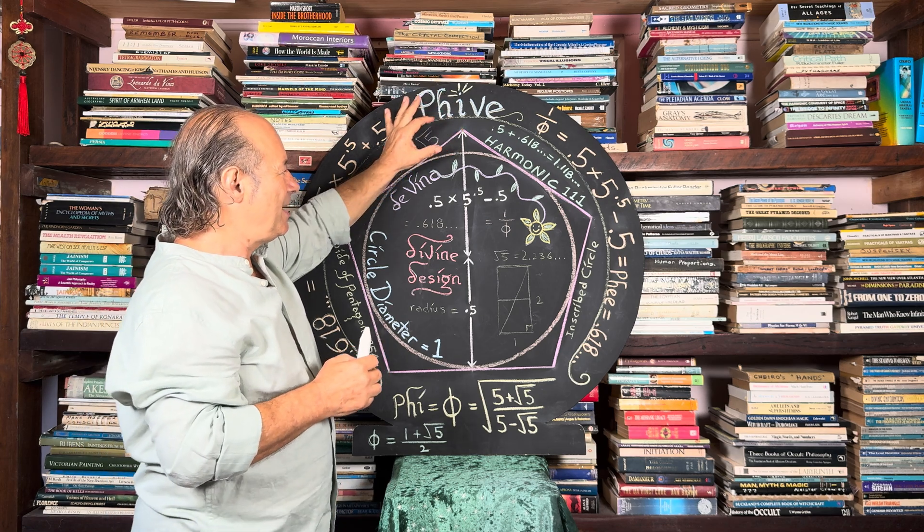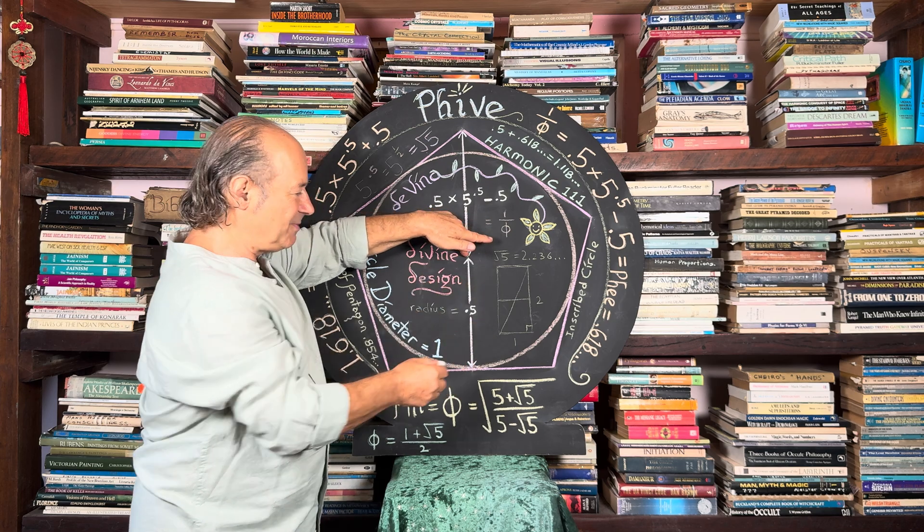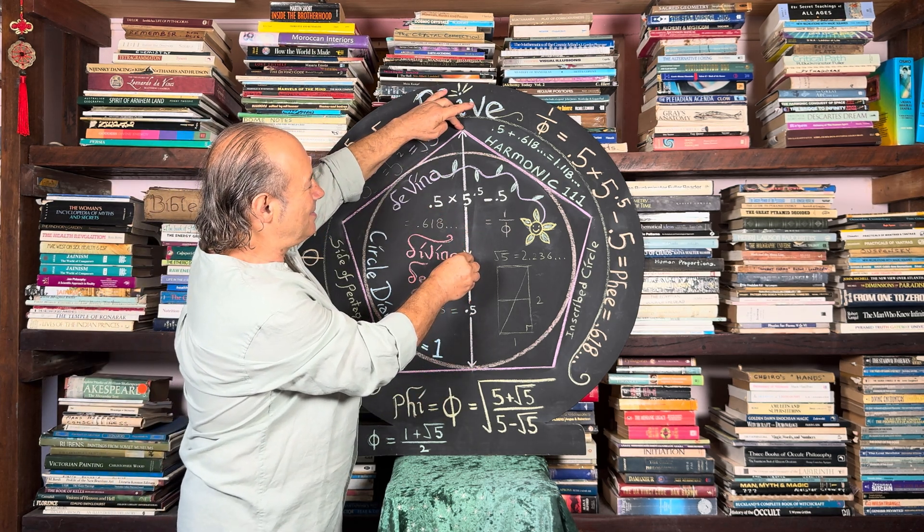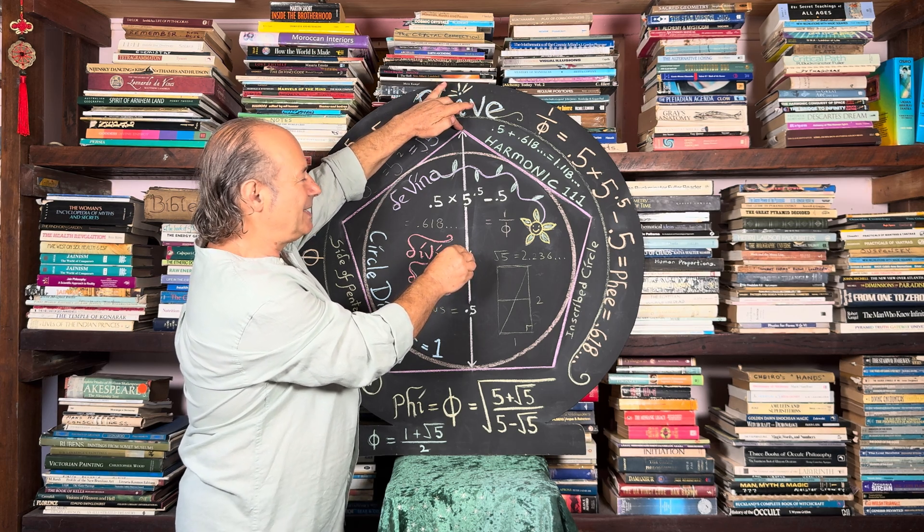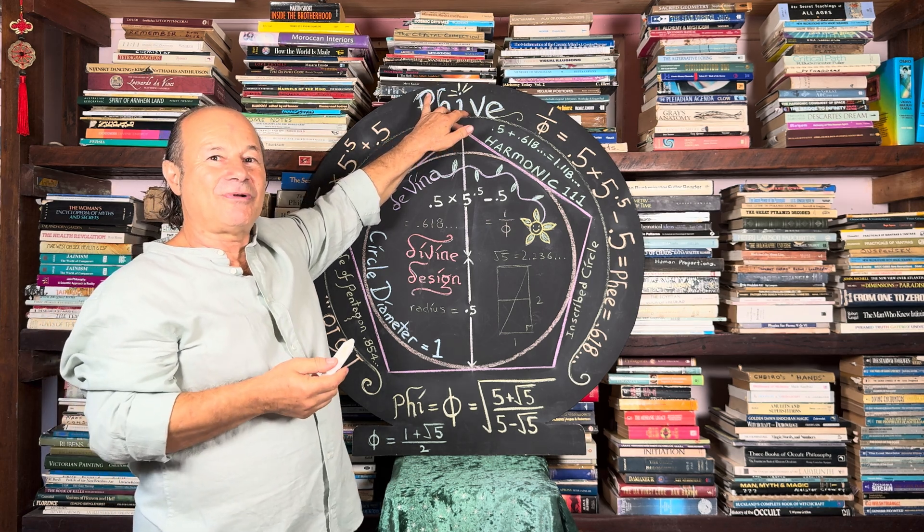So what's important here is that we have the radius of the circle from the center to here is 0.5. And this distance here, just to give you the conclusion, the distance from the center to the tip is called 0.618. It's called the golden ratio, the reciprocal of phi.